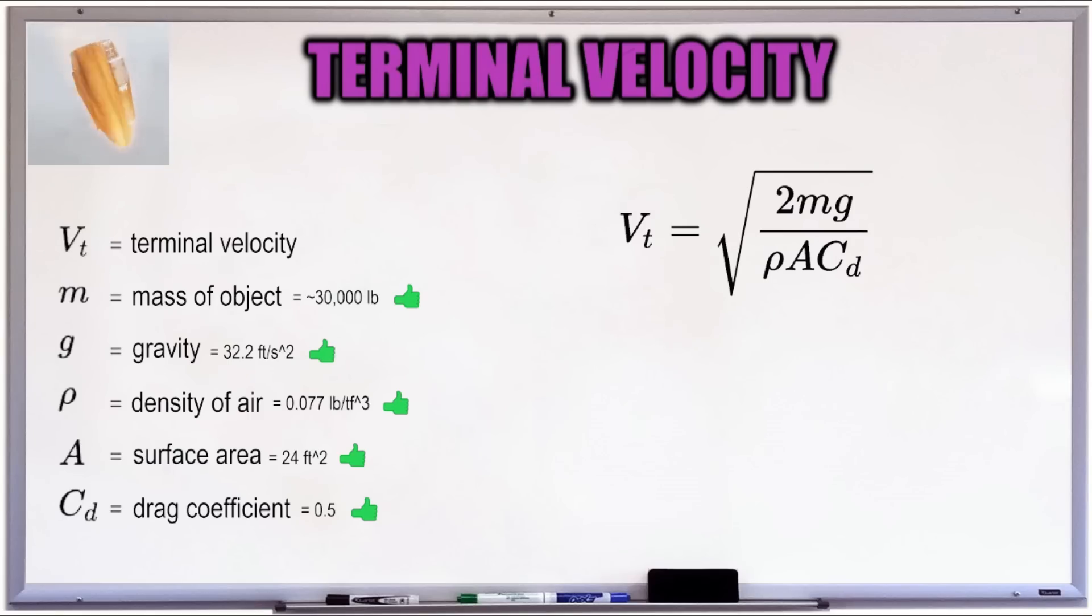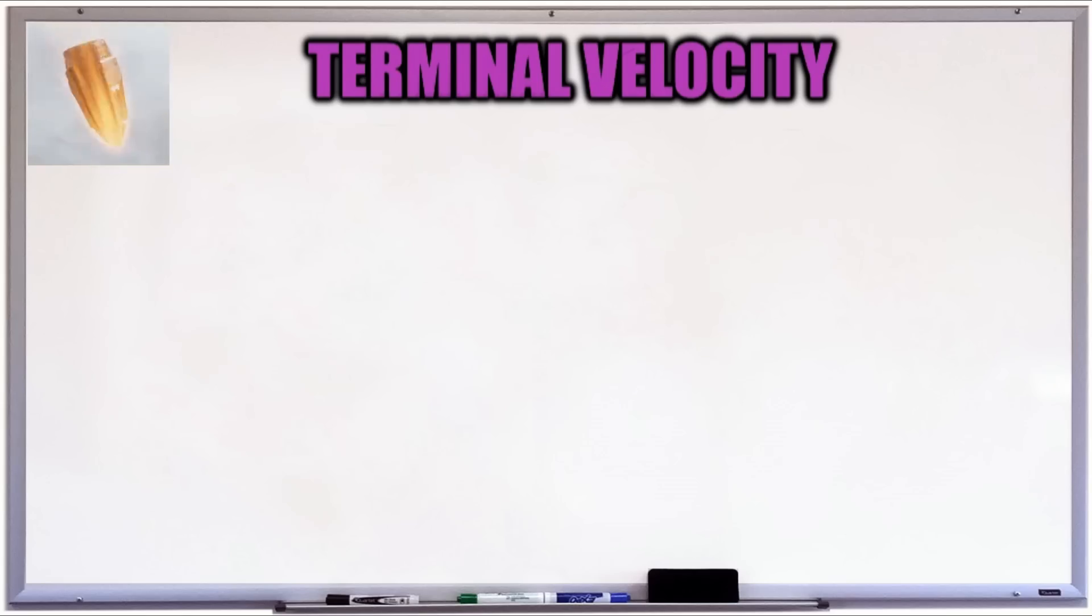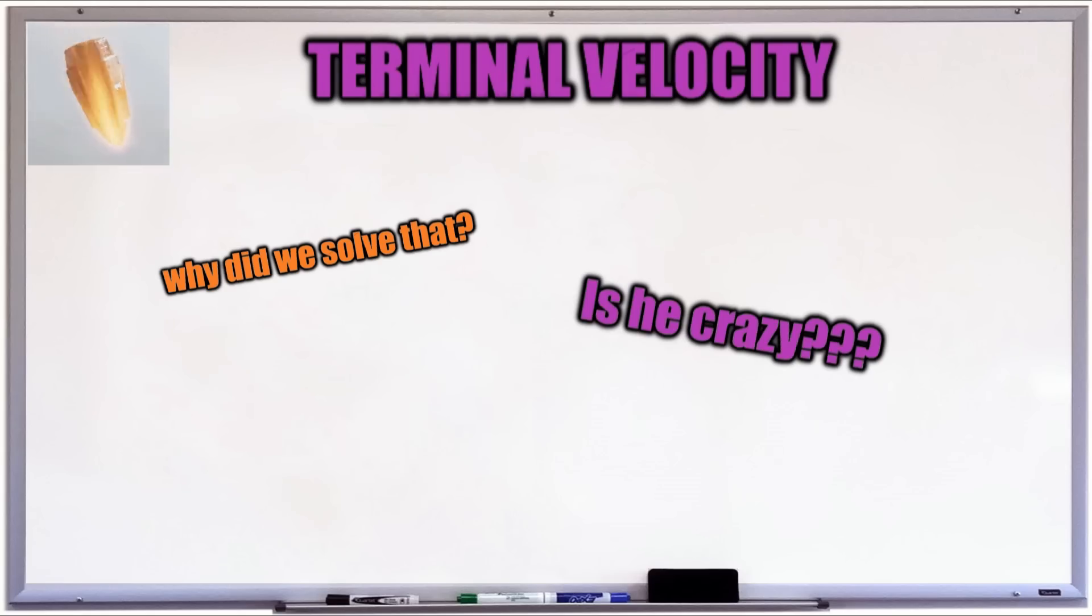We have every part we need to fill out this terminal velocity equation, and that gives us a final terminal velocity of the Hellpod of 1,475 feet per second, which is, in fact, very fast. Now, you may be thinking, why is this guy even solving for terminal velocity? The Hellpod has engines that pop out when you get close to the ground. You can use them to maneuver, and it slows you down when you land. You don't even need the terminal velocity. Does this guy just solve equations in his free time for fun? I tell you what, I do, but that's not the point. We actually needed that because we need to figure out how fast we're going when the engines slow us down.